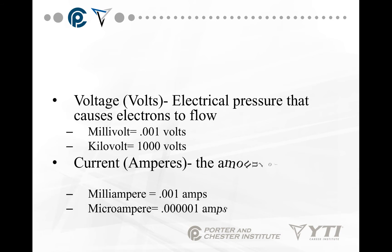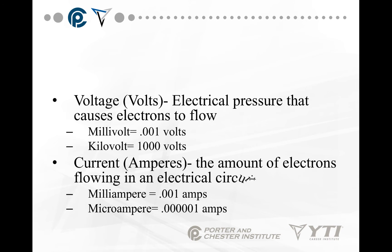Current, or amps, is the amount of electrons flowing in the circuit — sort of like the speed of electrons flowing. A milliamp is 0.001 amps. A microamp — add another three zeros.